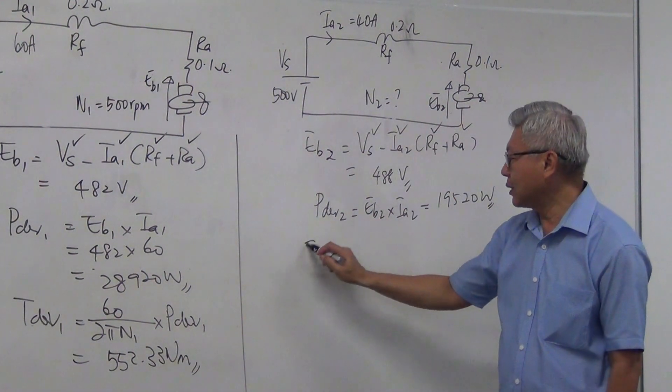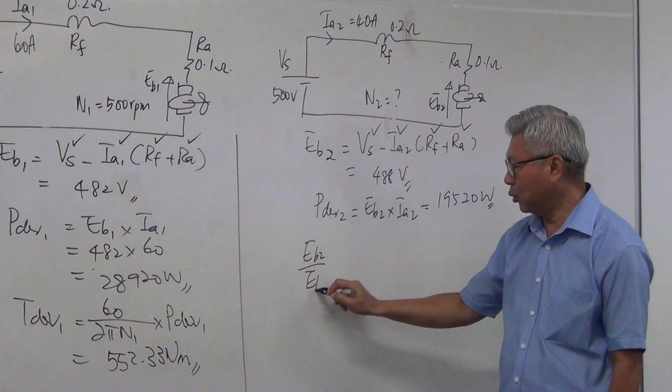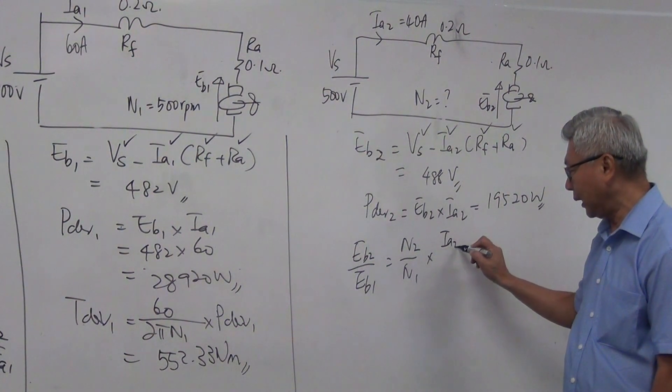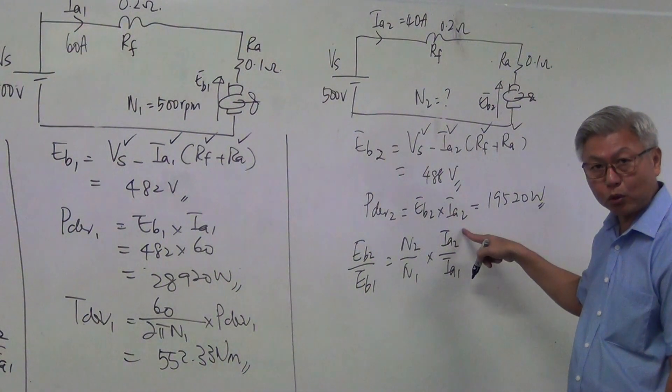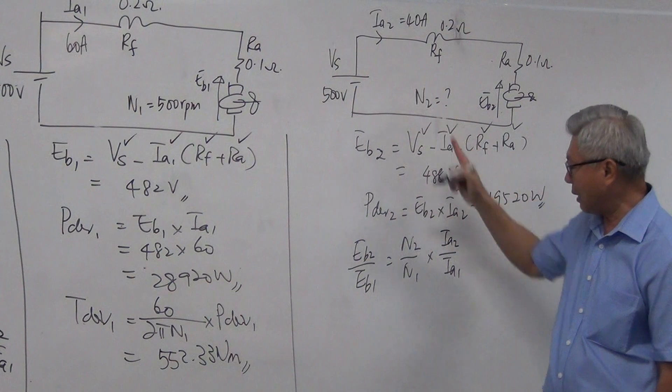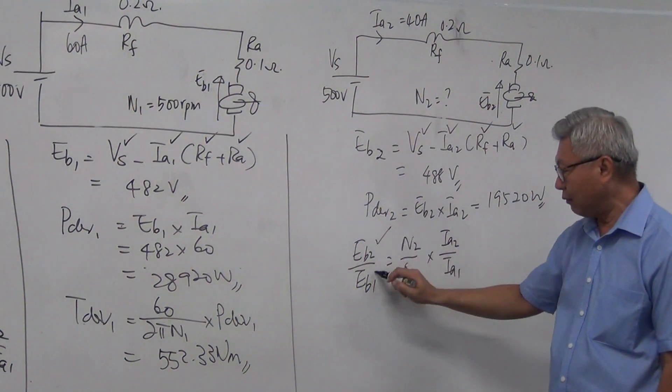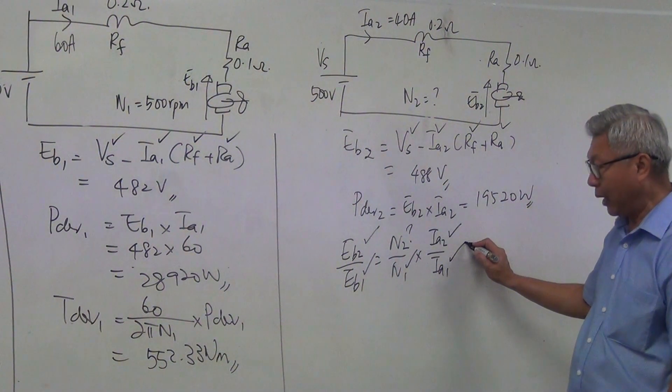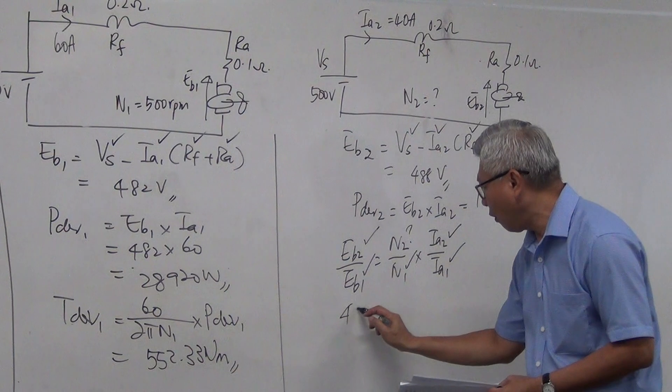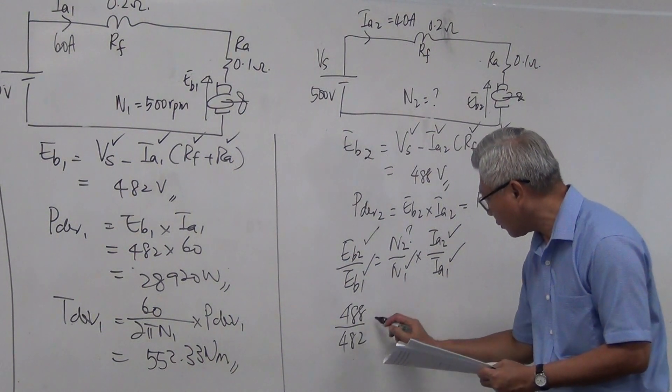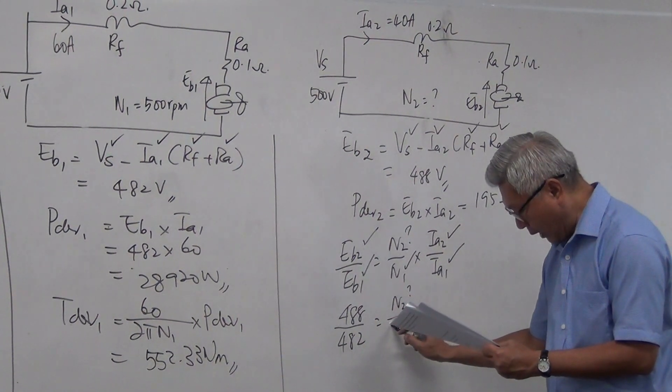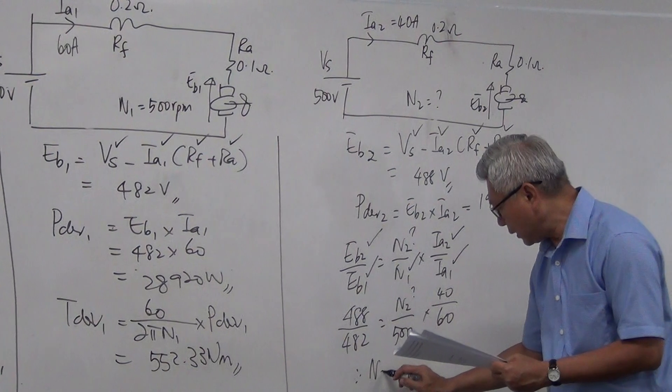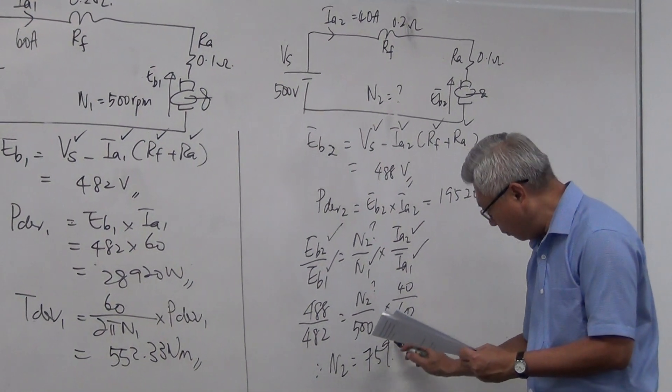I want to find new speed. So I use the EB proportional relationship. EB2 over EB1 equal to N2 over N1, F2 over F1, and I replace it with IA. The current that's responsible to produce the flux is IA, so we substitute it with IA. So I have EB2 value, I have EB1 I calculated it. N1 is given, N2 is unknown that I need to find. I also know IA2. So if I substitute all the values, that is 488 divided by 482, N2 is an unknown, N1 is 500 RPM, and IA2 is 40 ampere, IA1 is 60 ampere. So with that, we calculated out that the N2 is now 759.33 RPM.